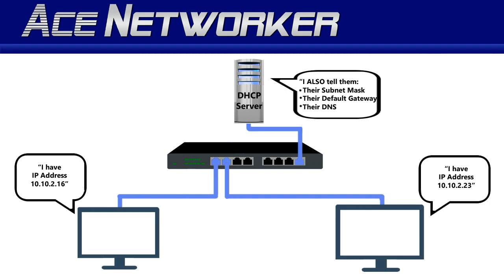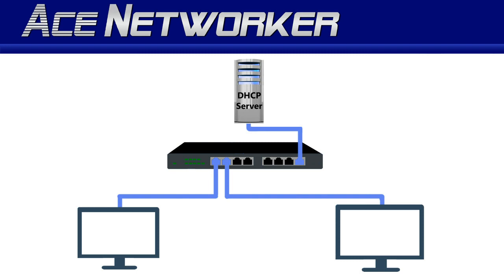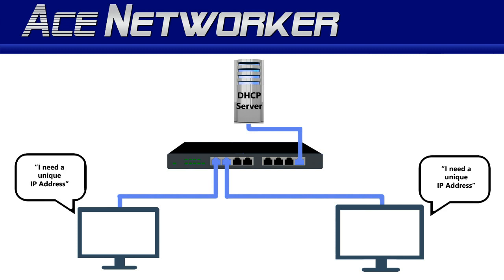DHCP can be a server and or a client. Using this simple network as our example, we have two PCs, a switch, and a router. In order for these two computers to connect and work on the network, they will each need a unique IP address — unique not just to each other, but unique on the entire local area network segment. If each host does not have a unique IP address, incorrect devices will be receiving and sending information, and you really don't have a network.